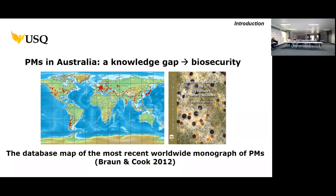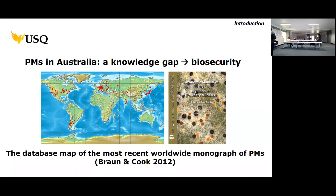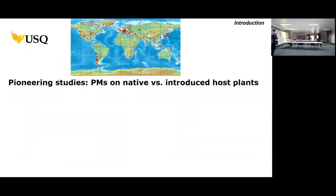What kind of powdery mildew species are here in Australia? Other biotrophic pathogens, such as rust fungi and smut fungi, are much better known — we have good databases of what is already in the country. However, for powdery mildew species, something like that was really missing.